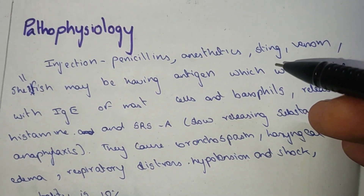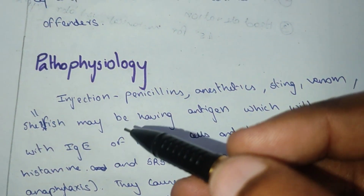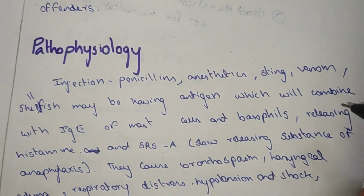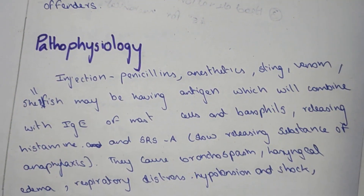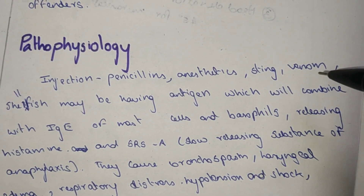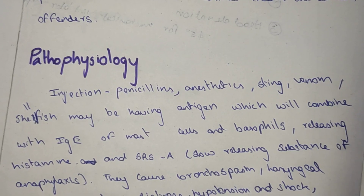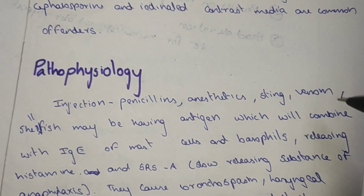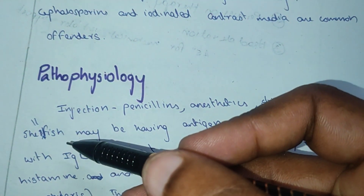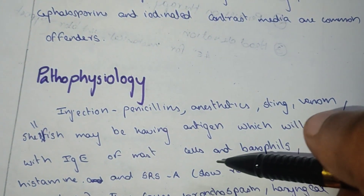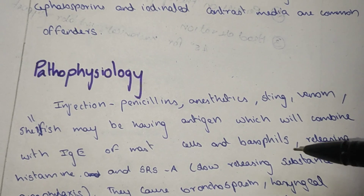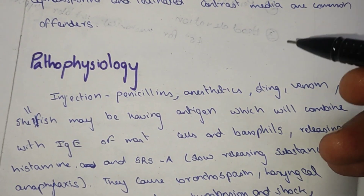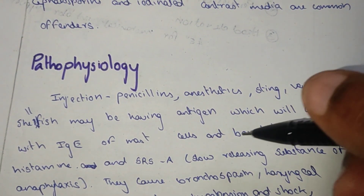Pathophysiology: injection of penicillin, anesthetic, insect sting venom, and shellfish may introduce an antigen which will combine with IgE. IgE is present on the surface of mast cells and basophils, triggering the release of histamine.